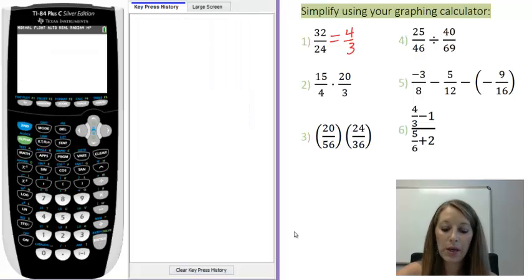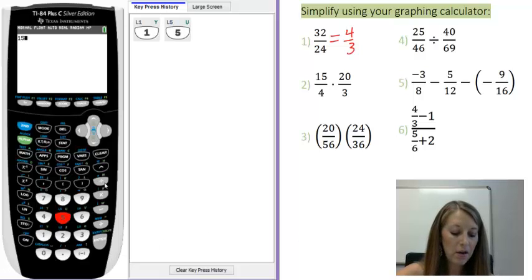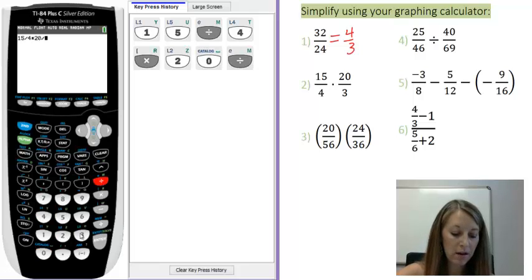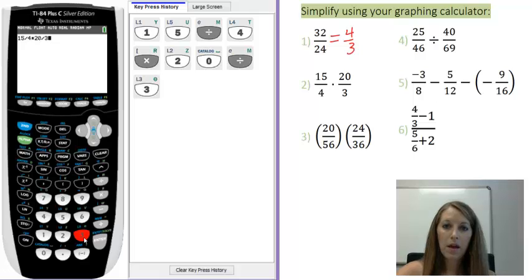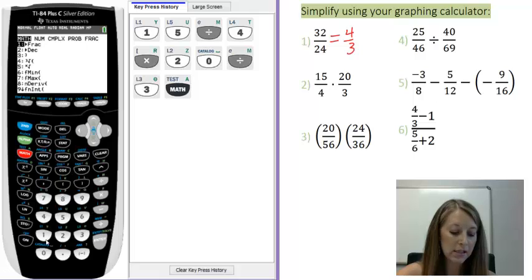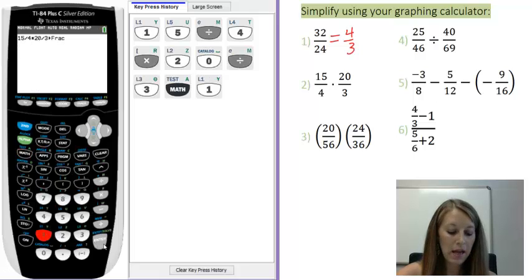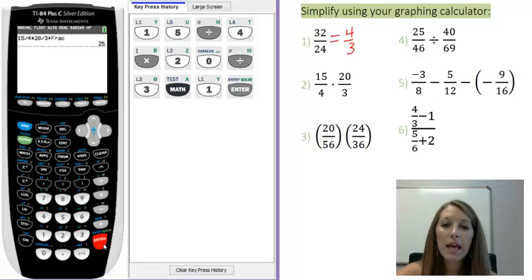Moving on to example two, I'm just going to type it in just like I see it, 15 over or divided by 4 times 20 over or divided by 3. And again, I can either hit enter to see the decimal format and then convert it to a fraction, or if I don't care to see the decimal format, I might as well go ahead and select the conversion in this step. And I hit enter, and I can see that my answer here is 25.